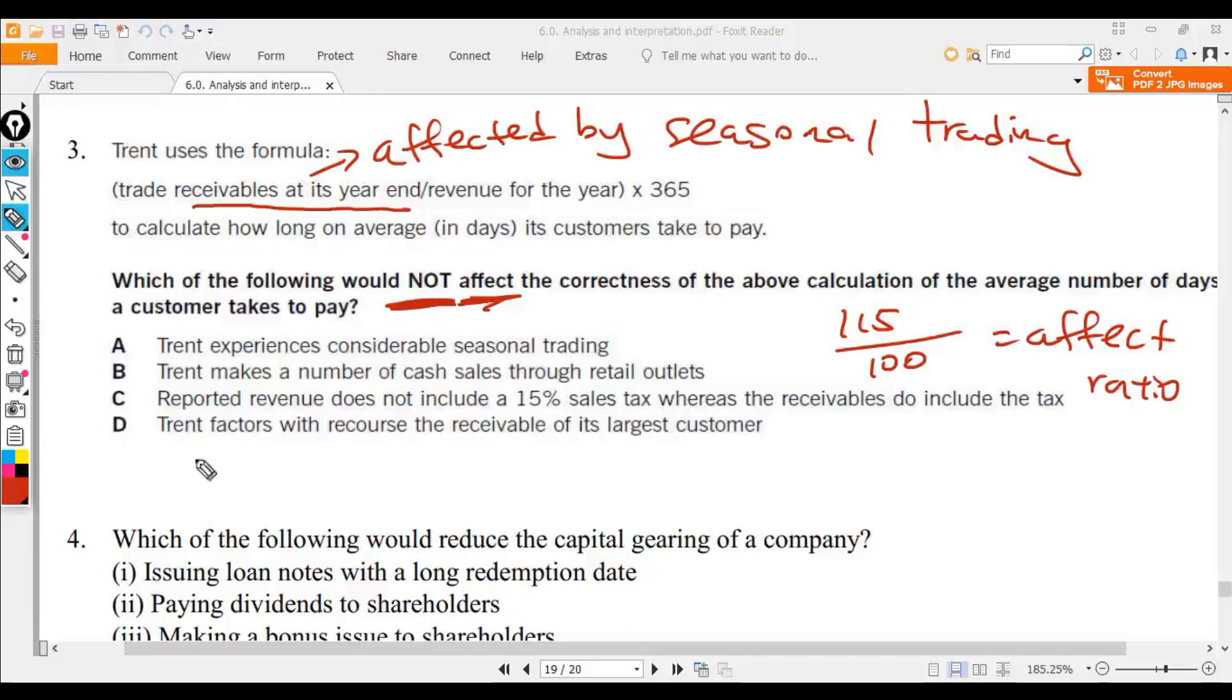So the answer must be D then, because ABC also affects the correctness of the ratio. The company factors with recourse the receivable of its largest customer.